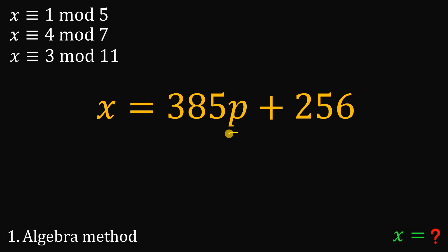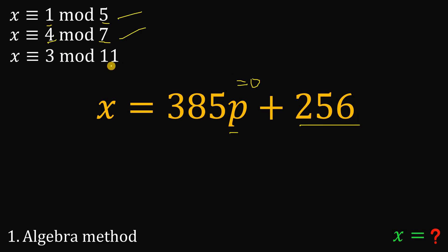We know this is the value of x. If we want the smallest positive value of x, we let p equal 0. So the smallest positive value of x is 256. When 256 is divided by 5, you get 51 remainder 1 — correct. 256 divided by 7 is 36 remainder 4 — correct for the second congruence. And 256 divided by 11 gives 23 remainder 3, which satisfies the third congruence. Therefore, the smallest positive value of x is 256.